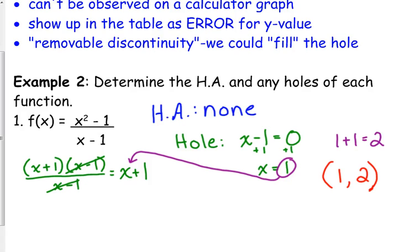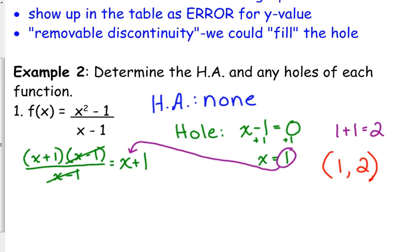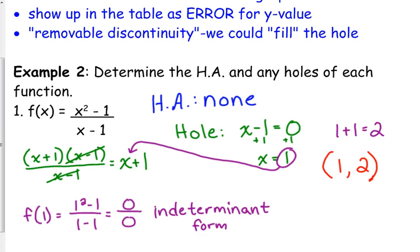Let's look really quickly back at the original function. If I plug in 1 into my original function, f of 1, I get 1 squared minus 1 over 1 minus 1. That gives me 0 over 0. That is what we call an indeterminate form. 0 divided by 0. Technically, we don't really know what that is. Remember, division is grouping things together. Well, how do we group nothing into no groups? It doesn't really make sense. There's no definition for that. That is what a hole is. When you plug in that x value, you're going to get 0 over 0, and that's an indeterminate form. That's where a hole occurs.